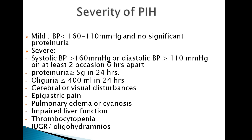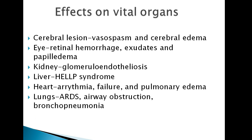In very severe preeclampsia, the patient may present with proteinuria of 5 grams in 24 hours, oliguria of more than 400 ml in 24 hours. If the edema is very severe, the patient may have pulmonary edema or cyanosis, along with all the symptoms previously mentioned.